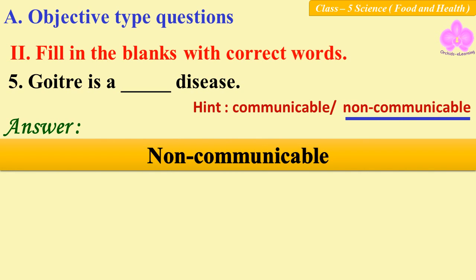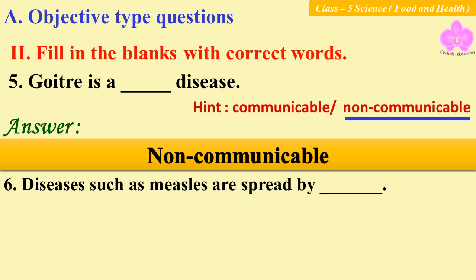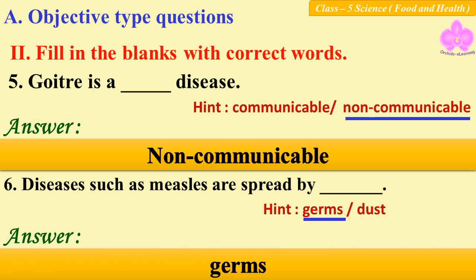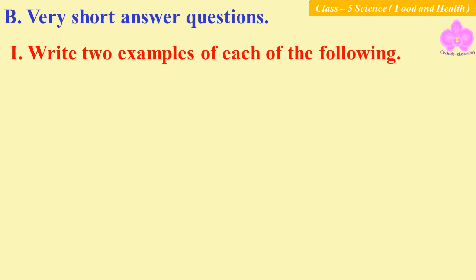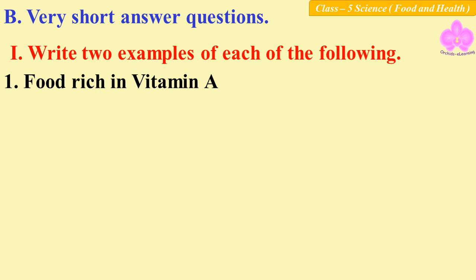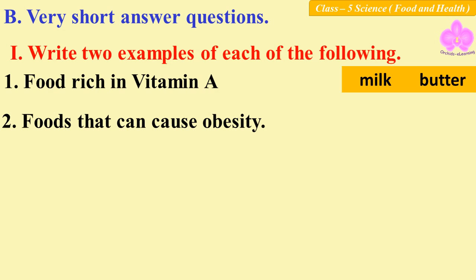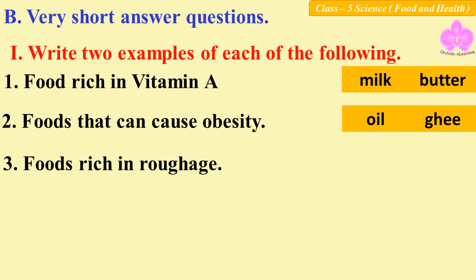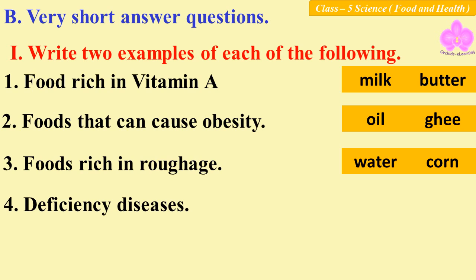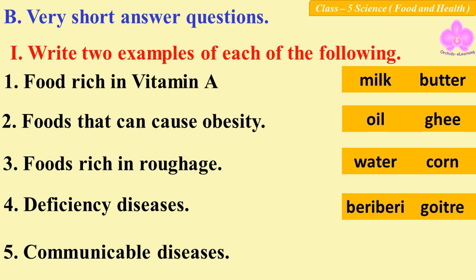Question number six: diseases such as measles are spread by dash. The exercise continues with matching items: germs that can cause obesity, oil and ghee foods, foods rich in roughage, water, corn, deficiency diseases such as beriberi and goiter, communicable diseases including malaria and fever.